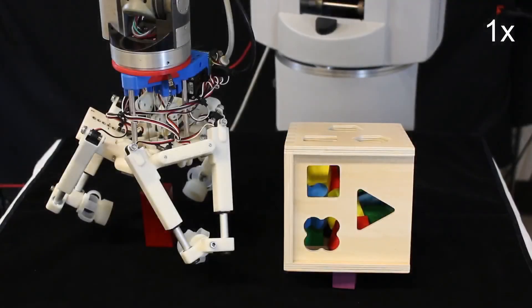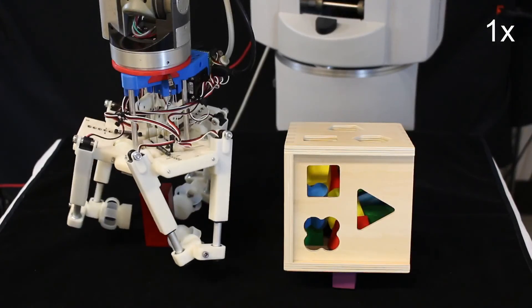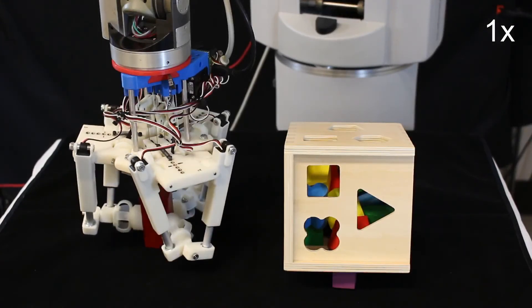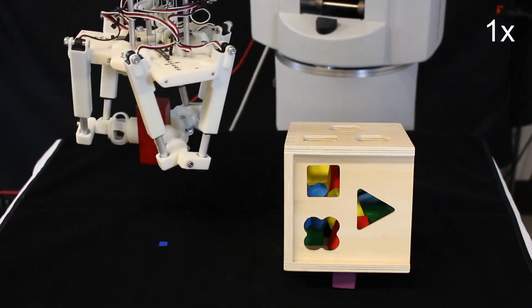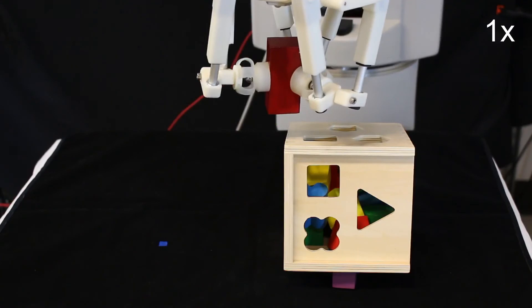Finally, we demonstrate a peg-in-hole insertion task. The hand grasps an object and is positioned close to a matching hole at an irregular orientation using the robot arm. The operator then uses the hand to reorient, reposition, and insert the object into the angled hole.